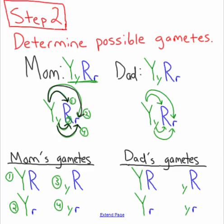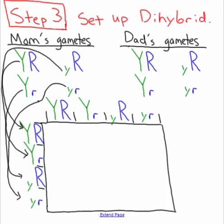Since both parents have the same genotype — both are heterozygous — dad's gamete combinations are going to be the same as mom's. The next step is going to be to set up your dihybrid Punnett square, which means putting your letters on the sides. You're going to have the gamete combinations go on the side and on the top of the Punnett square. I don't care if mom goes on the side or the top, but her letters need to stay together.